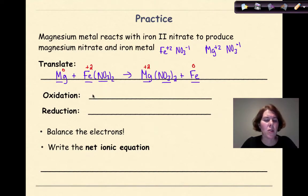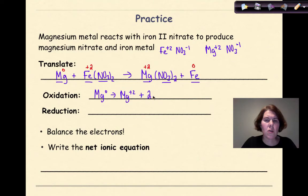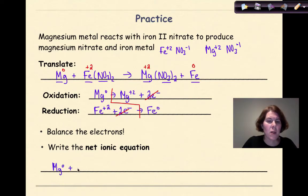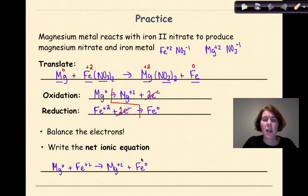So Mg is going from zero to plus two. When we write the half reaction, it's going to be Mg zero to Mg plus two, yielding two electrons. Then Fe plus two is going to be reduced — we're going to gain some number of electrons to become Fe zero. Fe plus two ion to Fe zero means we're going to gain two electrons. Charges are conserved: two electrons lost, two electrons gained. I'm going to put my stair step in to divide my two half reactions, cancel my electrons, and rewrite what is left over. Mg zero plus Fe plus two yields Mg plus two plus Fe zero, and again I have my net ionic equation.